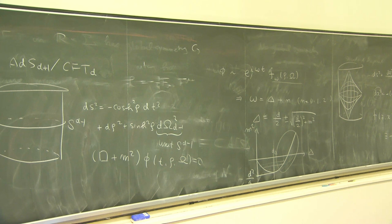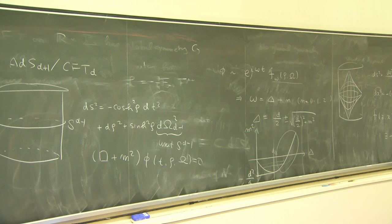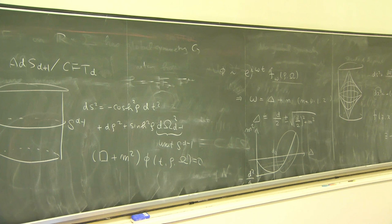In conformal field theory, what this means is that the coefficient A is a source, and B is the expectation value. When you have a non-trivial A for this operator, the Lagrangian density of the CFT is deformed by adding an operator on the boundary, where operator O is the operator dual to the scalar field phi. AdS/CFT correspondence identifies the bulk field with a boundary operator.